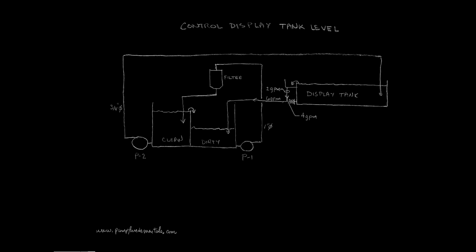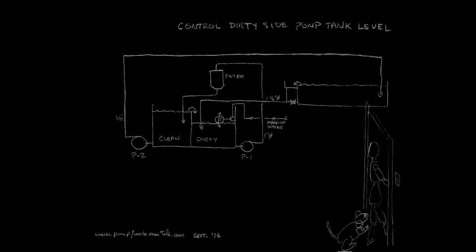A ball valve is a good choice and they are readily available. There is one last level to control: the pump tank dirty side. The evaporation of water in the display tank is still taking place, and this is a good place to introduce makeup water. We could use a toilet cistern water control float valve, which is very effective and trouble-free. In industry they would use a control valve controlled by a pressure sensor detecting level in the tank, and this is exactly what the cistern float does on a small scale.